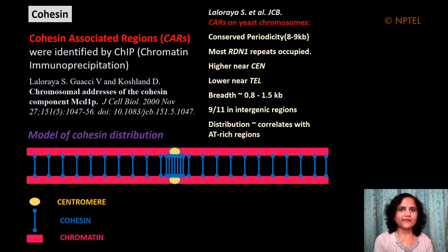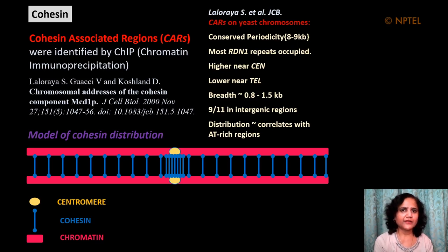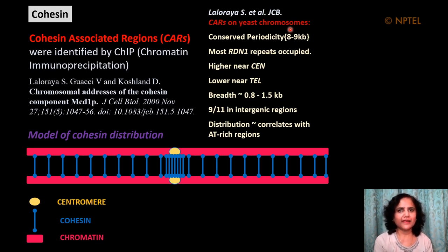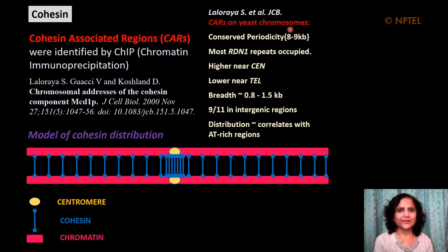To identify the sequences to which cohesin binds in yeast cells, MCD1 was immunoprecipitated from sheared formaldehyde cross-linked chromatin. This experiment was done by me several years ago, and we observed the selective enrichment of some sequences but not others in the MCD1 chromatin immunoprecipitates. We identified specific sequences to which cohesin binds in yeast cells and named them cohesin-associated regions, or CARs, in analogy with SARs and MARs — previously identified putative DNA elements thought to be determinants of higher order chromosome structure.